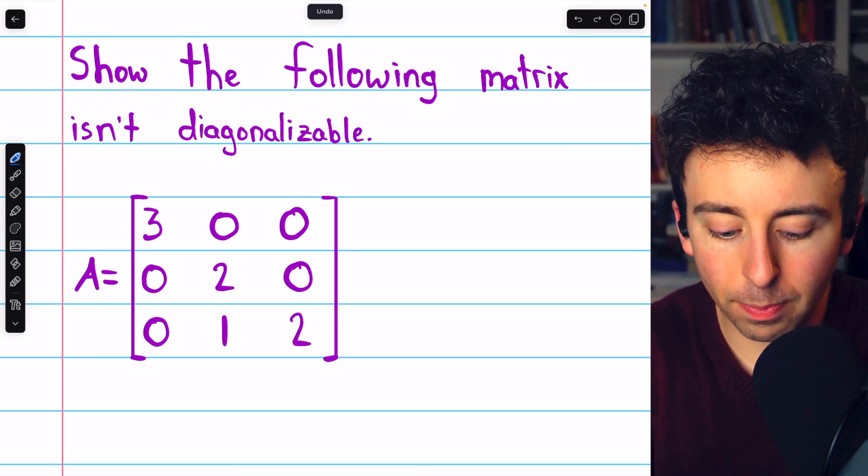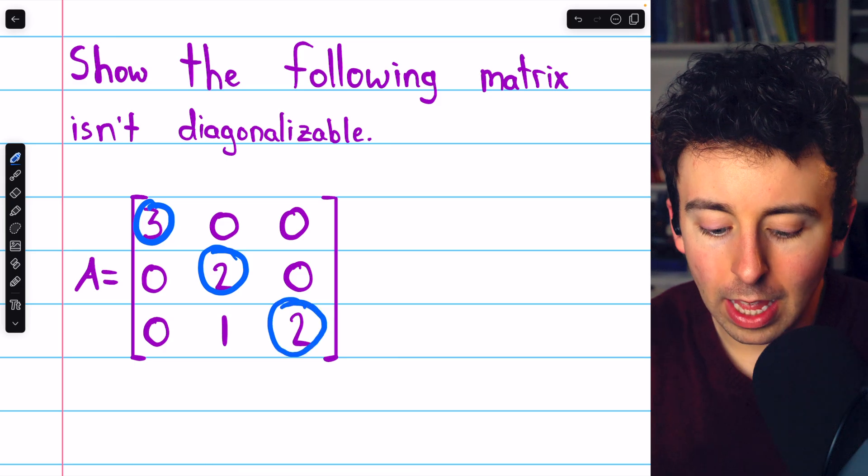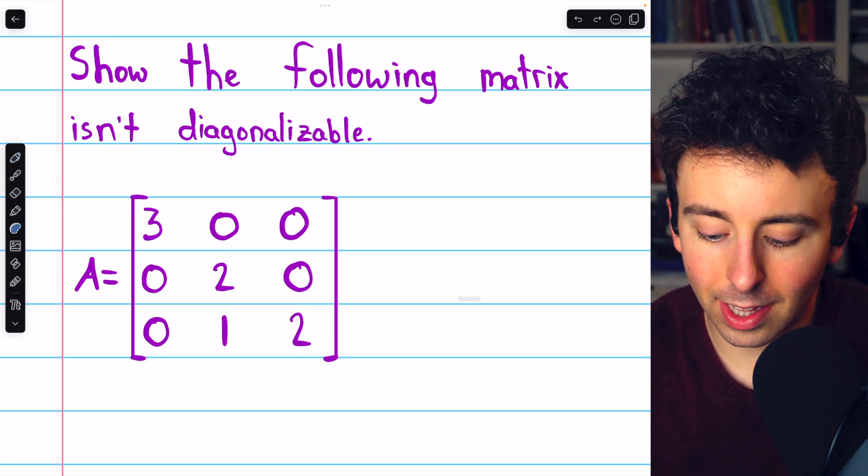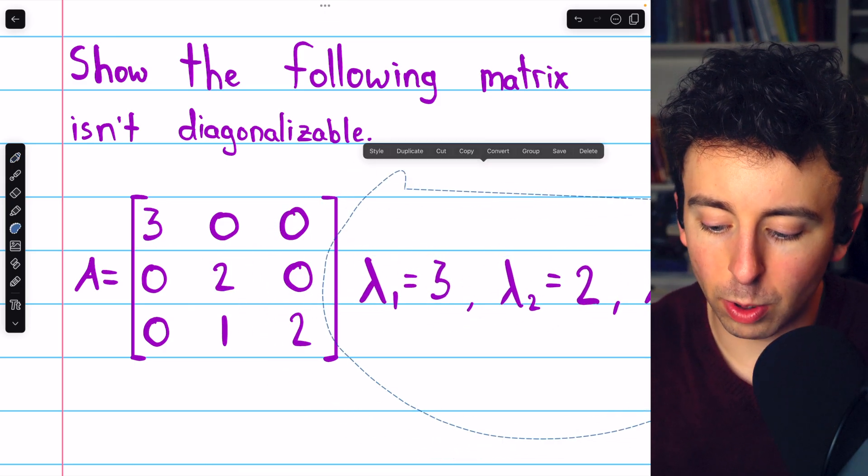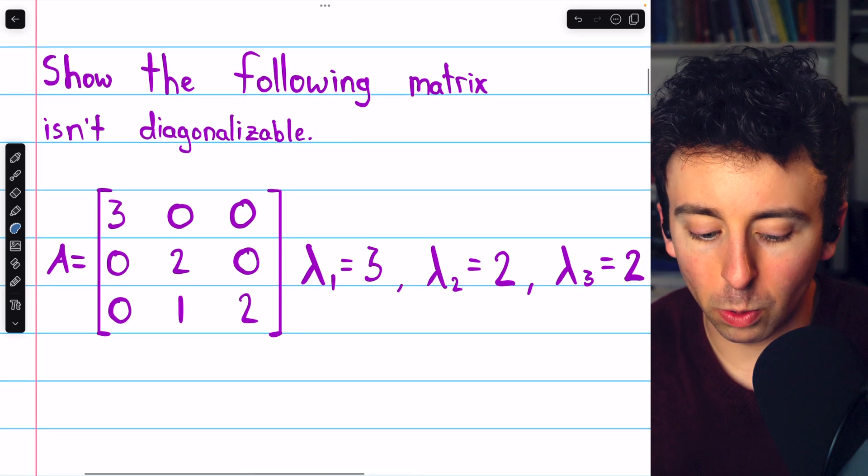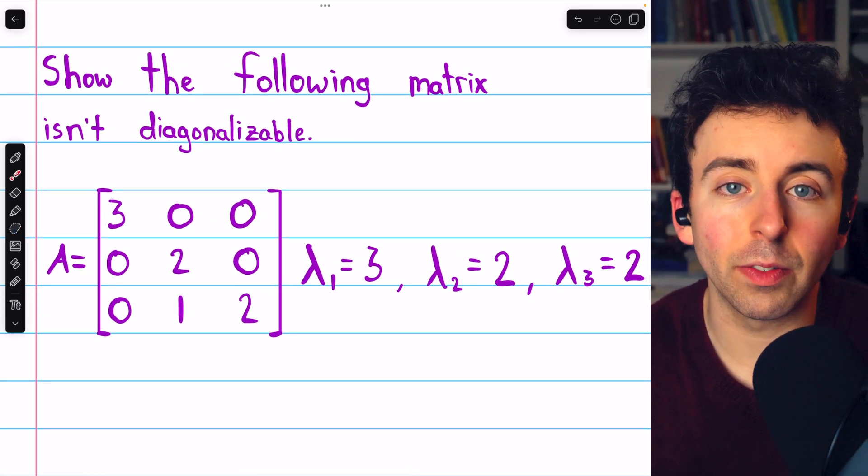So already at a glance, we can see that the eigenvalues are 3 and 2. There are only two distinct eigenvalues.